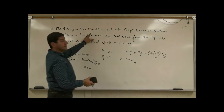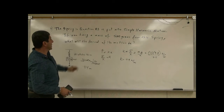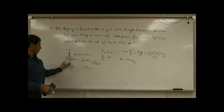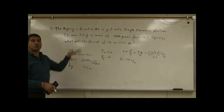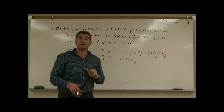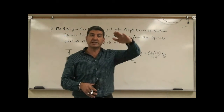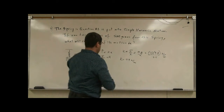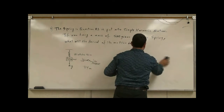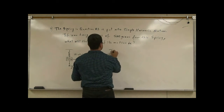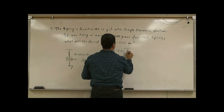Now in this problem, it's a follow-up to that. It's saying: if you hang a mass of 500 grams this time, you stretch it and then let go — what will the period of the motion be? The period of the motion is the time that it takes to make one complete cycle. The equation for the period is T equals 2π times the square root of m over k.